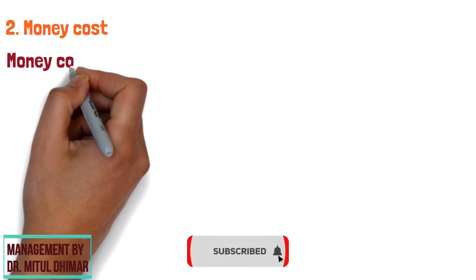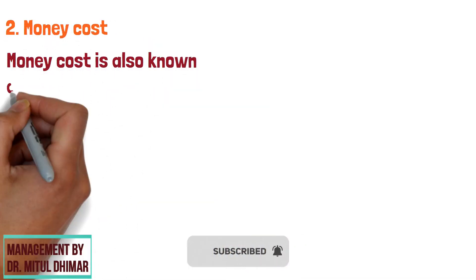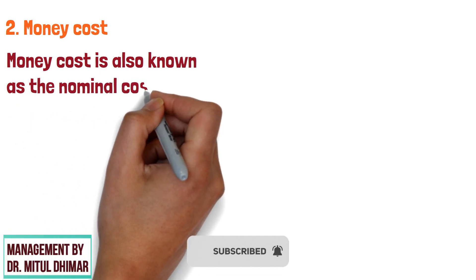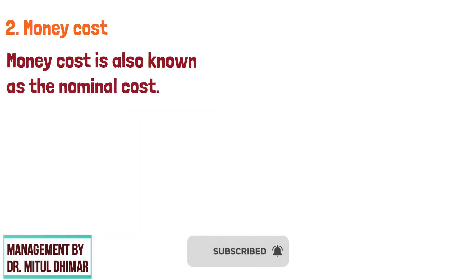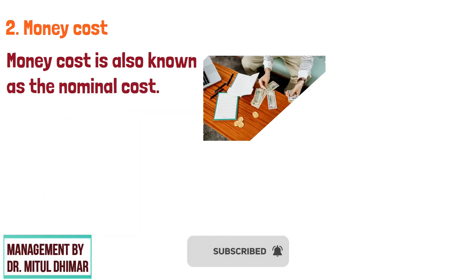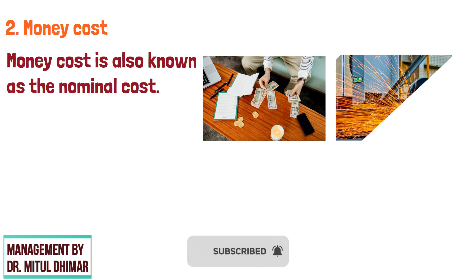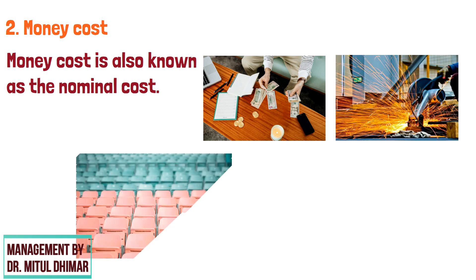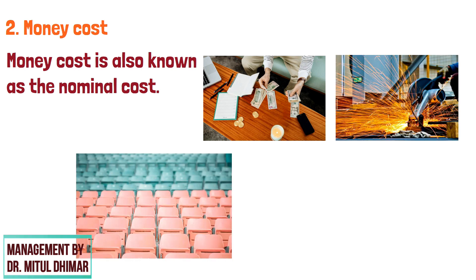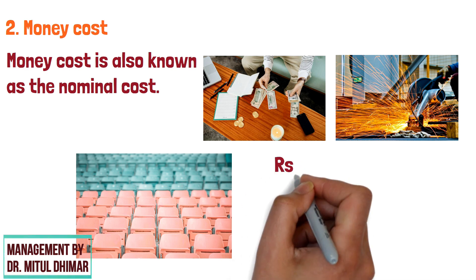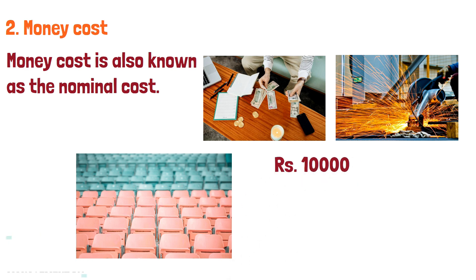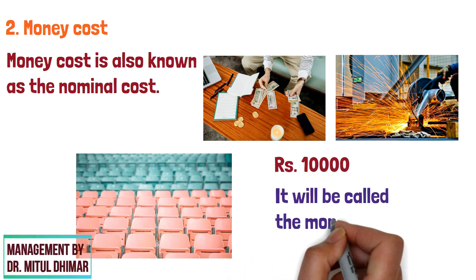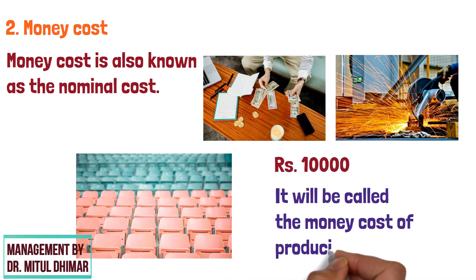Number 2: Money Cost, also known as the nominal cost. It is nothing but the expenses incurred by a firm to produce a commodity. For instance, the cost of producing 200 chairs is Rs 10,000, and then it will be called the money cost of producing 200 chairs.